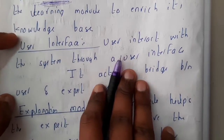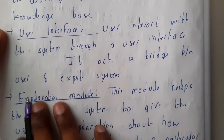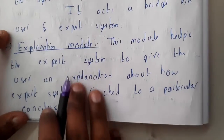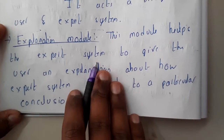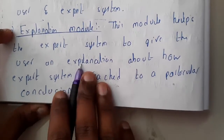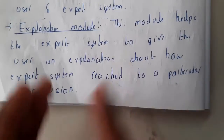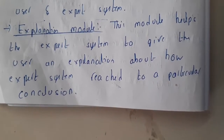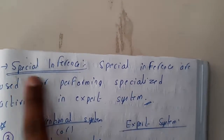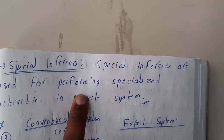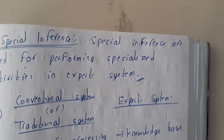The user interface allows the user to interact with the system — it acts as a bridge between the user and the expert system. The explanation module helps the expert system give the user an explanation of how it concluded with a particular result, providing a step-by-step approach. Finally, the special interface is used for performing specialized activities in the expert system.